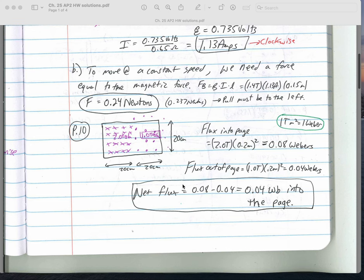For P10, it's asking you to figure out the net magnetic or the net flux. This is two Tesla into the page, this is one Tesla out of the page. Obviously this is stronger. There's a couple ways you could have done that, but I just got the total variable for each of those areas which is flux times the area.